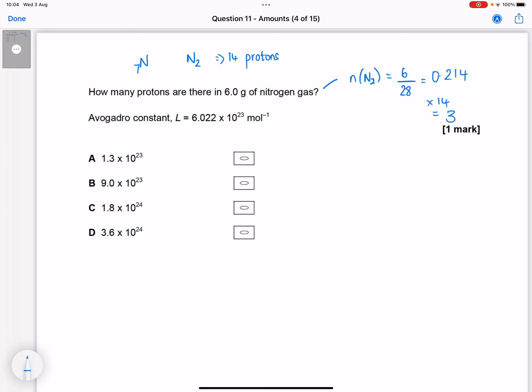So if we've got 3 moles of protons, and each mole is 6.022 times 10 to the 23, then how many actual protons do we have? We would need to multiply these two together.